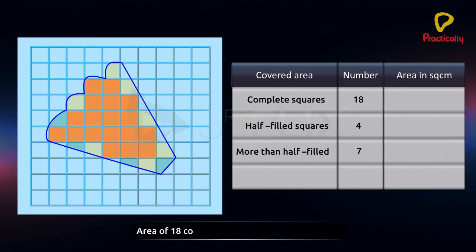Area of 18 complete squares equals to 18 multiplied by 1 square centimetres. Area of 4 half filled squares equals to 4 multiplied by half square centimetres.